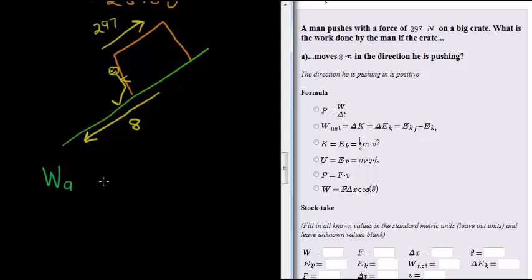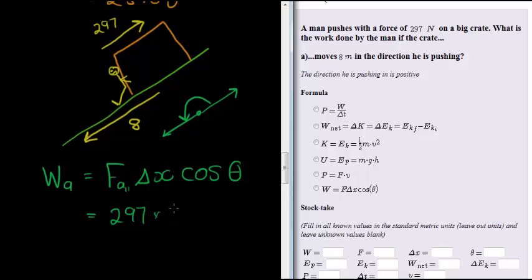And what do we get this time? The work that is applied this time by the man is the force that's applied that is parallel to the direction, times the displacement, times cos of the angle between them. Now this time you can see, if I were to put these two, the displacement and the force from end to end to work out the angle between them, I find that the angle between them is 180 degrees. So I get 297 times 8 times cos of 180 degrees.